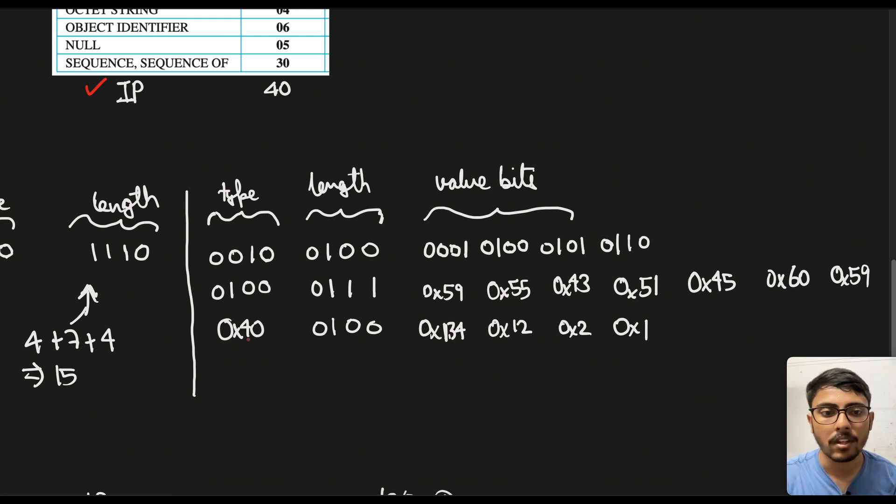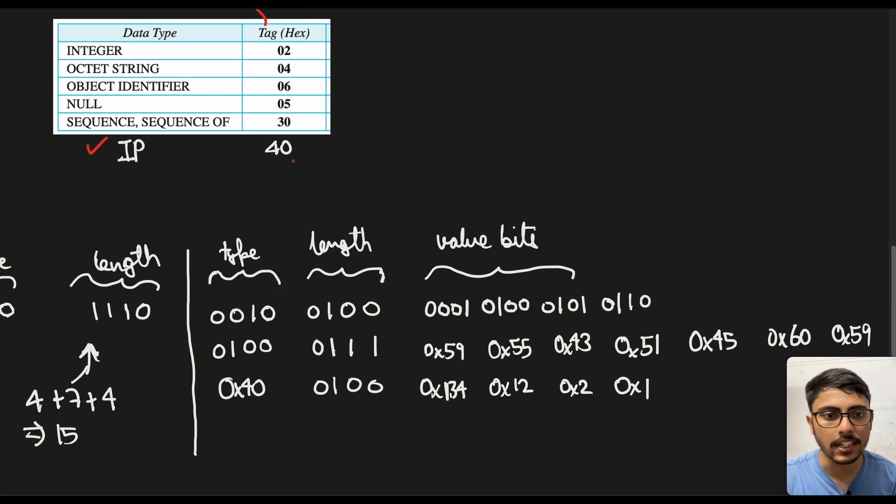And then for the IP address, you see again the IP was 40 as in hex. So I have just written it in hex. You can basically convert it into binary and display here. And the length is 4 and similarly.